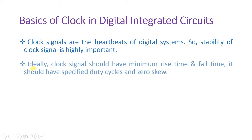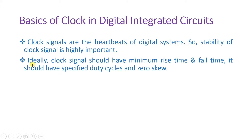Now let us try to understand how an ideal clock will look like. Clock signals should have minimum rise time and fall time, and it should have a specified duty cycle and it should have zero skew. So first of all one should know what is rise time, fall time, duty cycle, and skew of the clock — then one can understand what is an ideal clock.